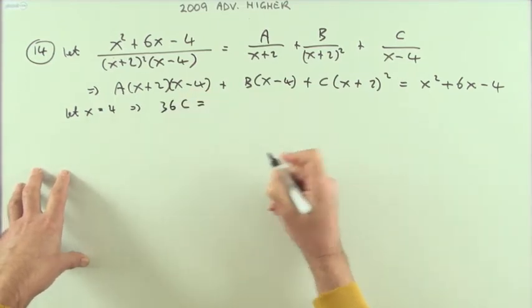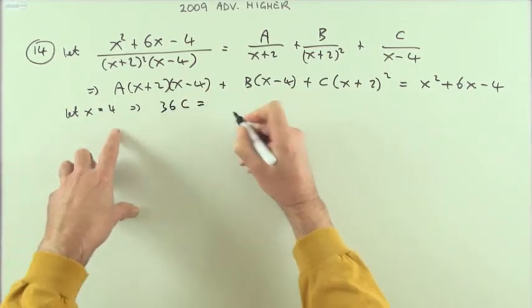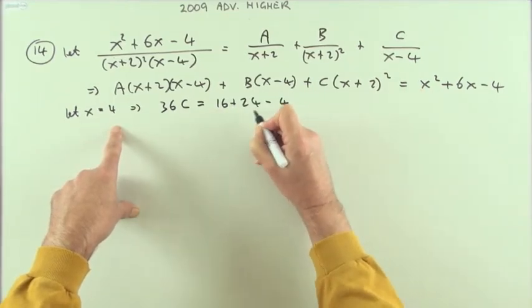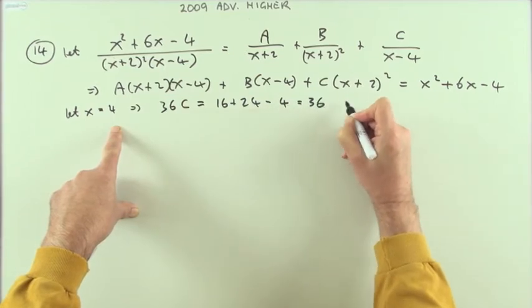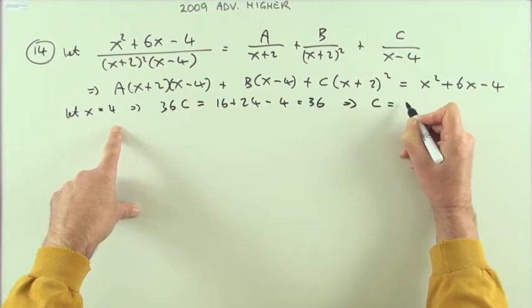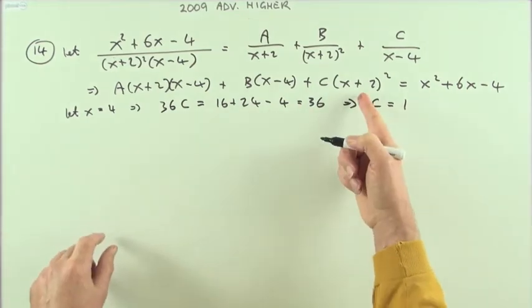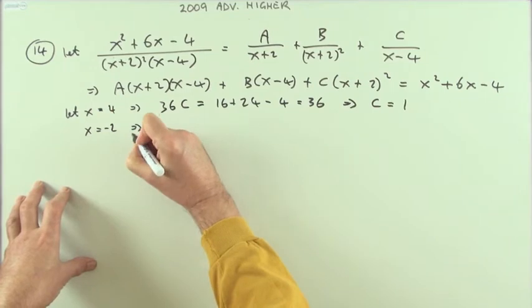If x equals 4, that goes, that goes, and I'm left with 6 here, so I've got 36c. This will be 16 + 24 - 4, which is 36, which means c equals 1.